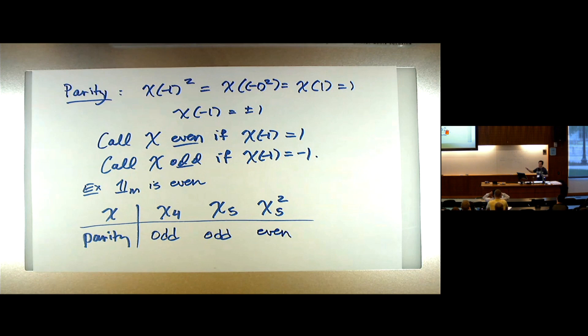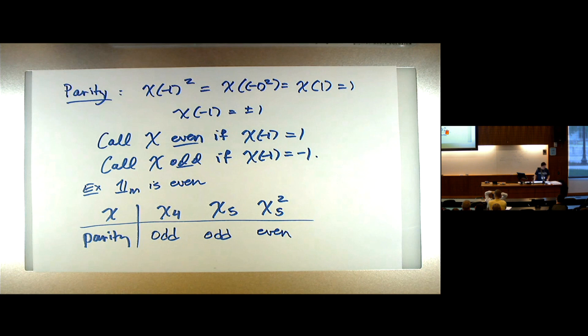The L-functions of even characters will have formulas at even integers, and there will be formulas at odd integers for L-functions of odd characters. The parity lines up nicely in that way. But in order to explain that, it turns out that to have a nice formula there is a little problem that can arise, and we need to get around it. This refers to the issue of primitivity.